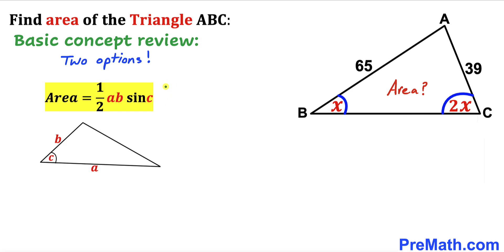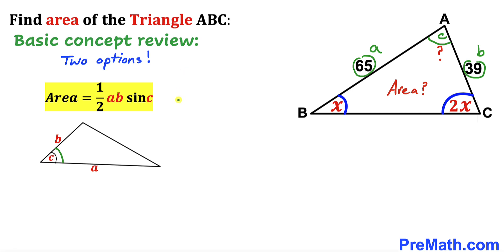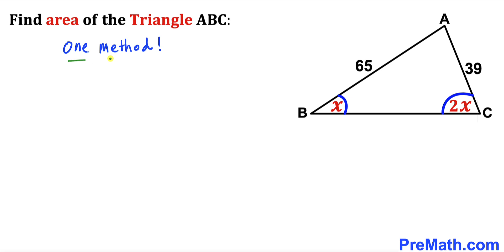Our second option is the formula: area equals one half times a times b times sine of angle C, where a and b are side lengths and C is the angle between them. We already know these two side lengths. If we call this angle C between the two sides, and can find angle C, we can use this formula to calculate the area of triangle ABC. I am going to use only one method.